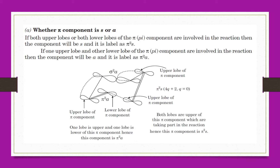On the other side, the two ends of the P orbitals show the lower lobe of pi. We consider the overlap of these orbitals to determine the symmetry character of each component.